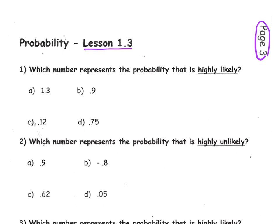Let's take a look at problem number one. It says which number represents the probability that is highly likely. Now let's take a moment and remember what the probability scale looks like. We know it starts at zero, which means an event is impossible, and it stretches to one, which means an event is absolutely certain. And in the middle we have an even chance.